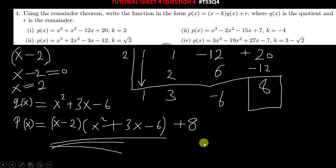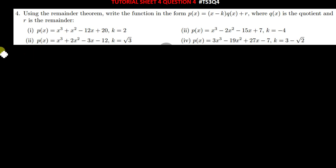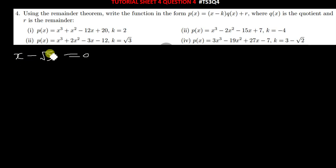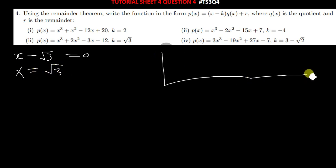Let us quickly move on to the next question. You do the same thing, the same steps. We know that our k is equal to the root of 3. So meaning we have x minus k, which is x minus root 3 equals 0. This is not a factor, but we use this to divide into the given polynomial. So the value of x is just simply the root of 3. You can use synthetic division or long division to divide that.